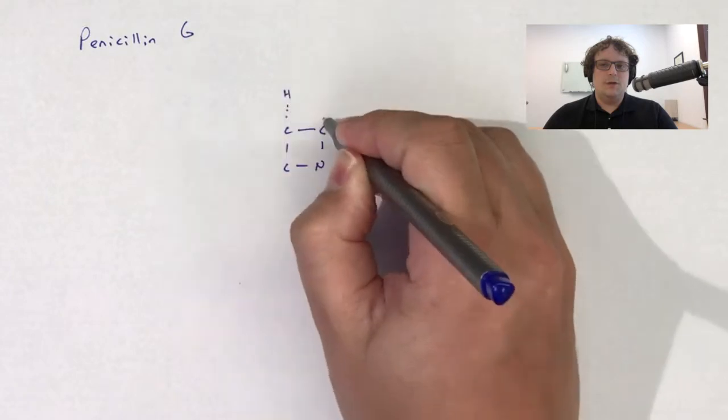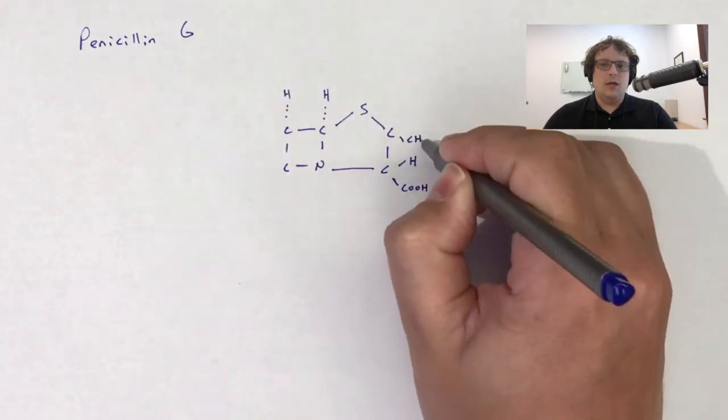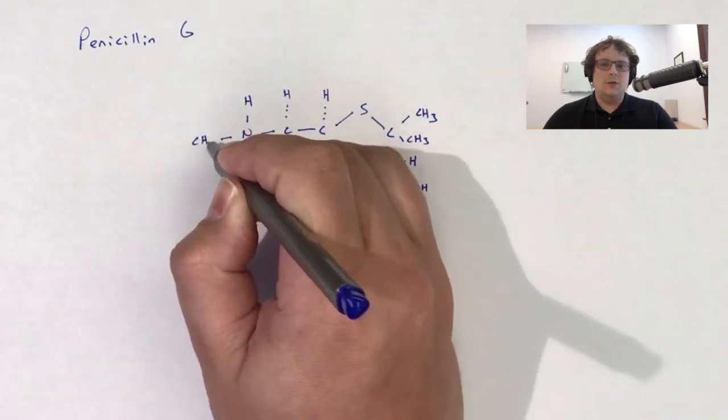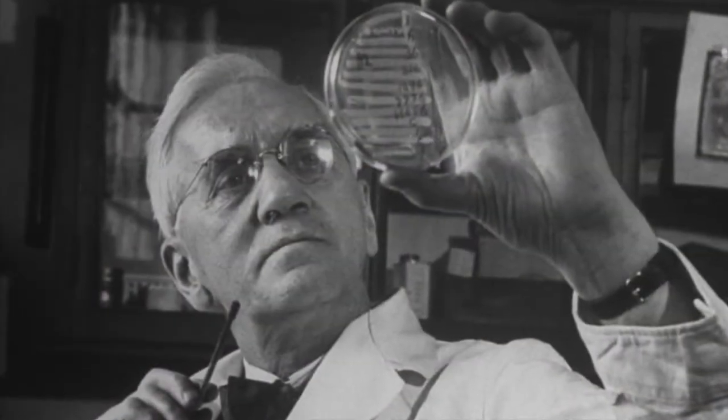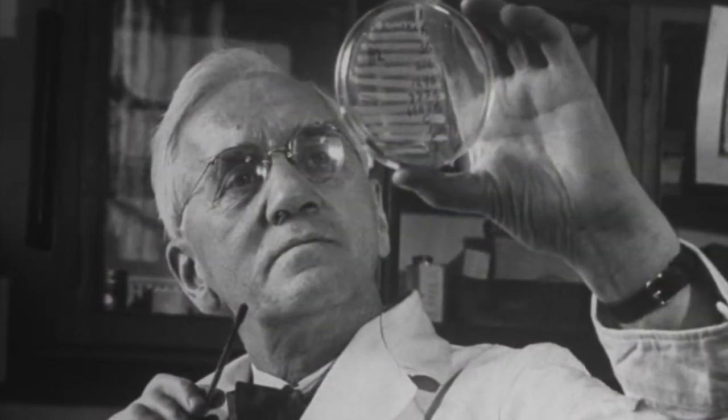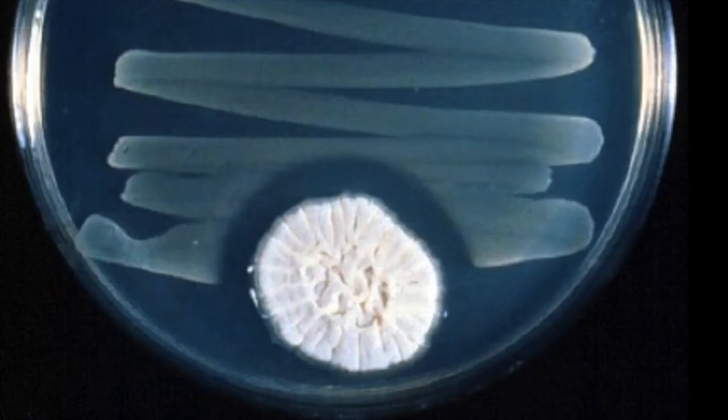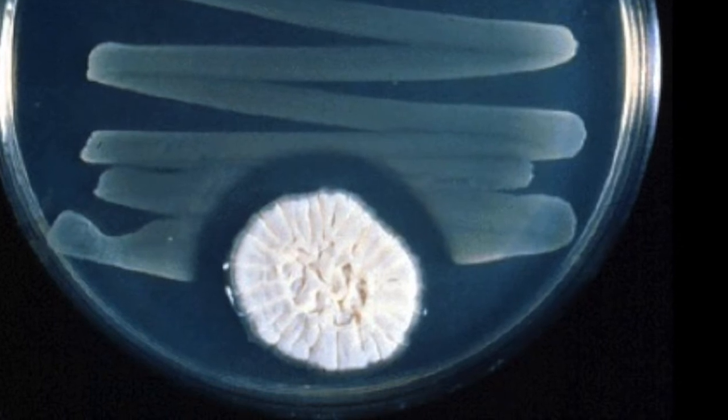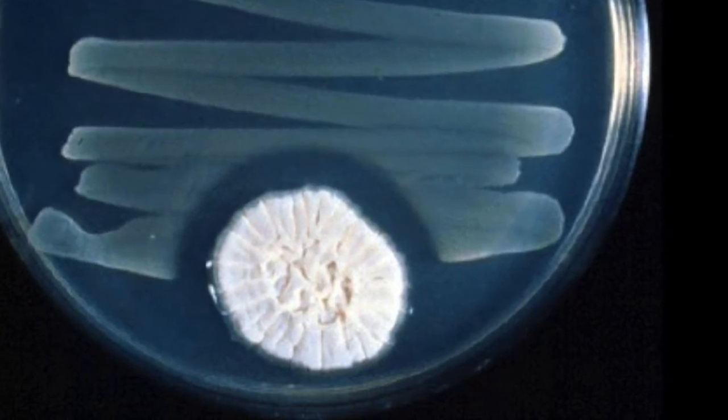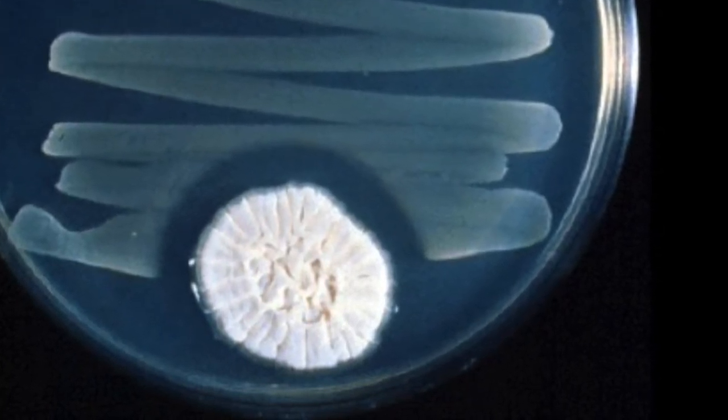Penicillin G is the original penicillin discovered in 1928 and first used in humans in the 1940s. Dr. Alexander Fleming discovered penicillin after finding that a contaminating mold culture was inhibiting the growth of his Staphylococcus aureus cultures. This mold culture turned out to be Penicillium notatum, which was secreting a chemical penicillin that inhibits Staphylococcus aureus.